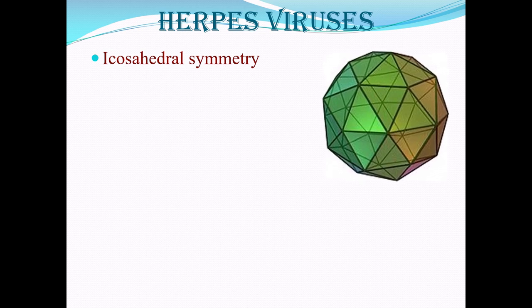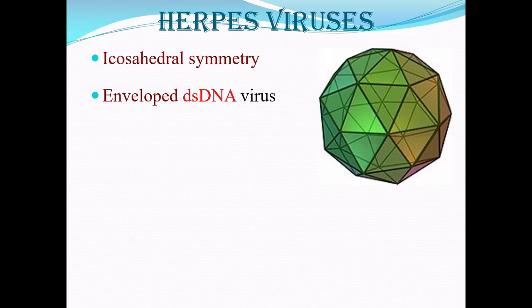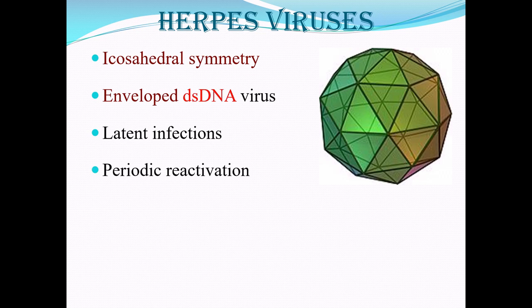The herpes virus is a spherical virus with icosahedral symmetry. It has a double-stranded DNA and is an enveloped virus. The beauty of this virus is it can stay in the body without causing any clinical symptoms for a long time, and it can cause infection at a later date. Most importantly, this infection can recur and get reactivated many times.